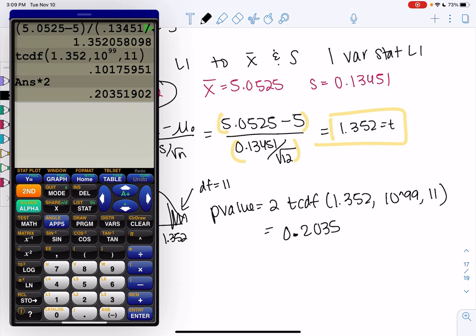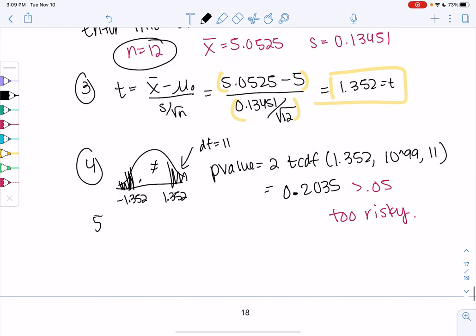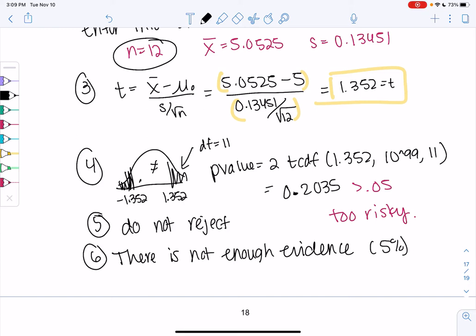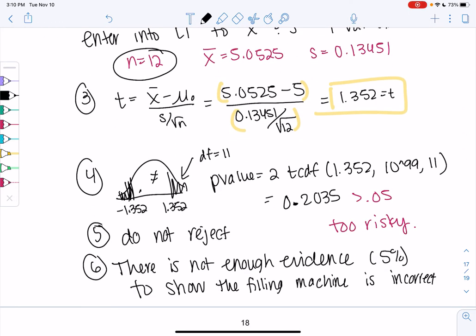This is too risky. If the bags are filling correctly, there's like a 20% chance this would randomly happen. So that's too risky. It's greater than our cutoff of 0.05. So we're not going to reject. There is not enough evidence at 5% to show that the filling machine is filling incorrectly on average. It might be incorrect for an individual bag, but we wanted the average to at least be 5. There's not enough evidence to show the filling machine is incorrect on average.